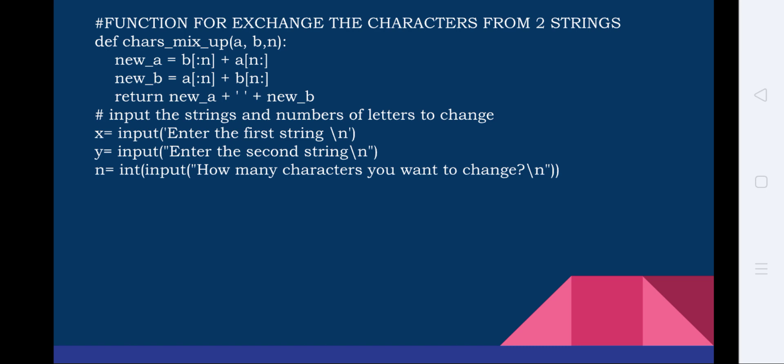The program also asks for the number of characters to change. In the example we saw two letters being changed, and now it asks how many letters you want to change — two, three, or four. So `n = int(input('How many characters do you want to change?'))`. Since Python always gets input as a string, n needs to be an integer, so the string is converted to integer using `int()`. These three lines get the values x, y, and n.